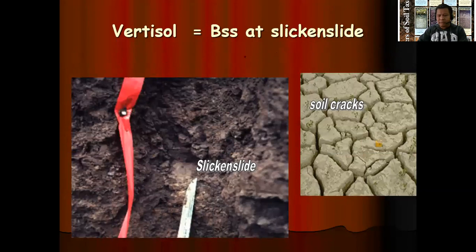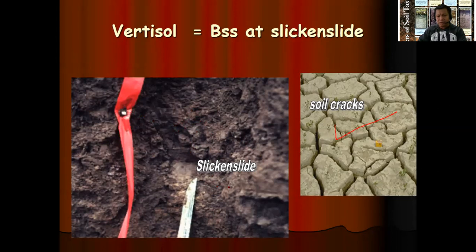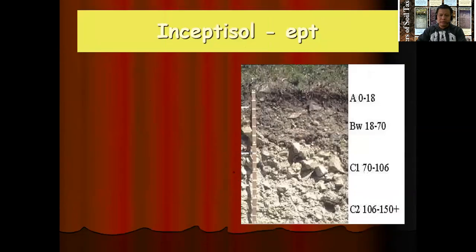Here is an example of vertisol. Look at the soil cracks, characteristic of vertisol, and the slickensides by which the soil would easily swell during rainy seasons or when saturated with water. Vertisol is not good for construction because it will bear down when subjected to high moisture content.